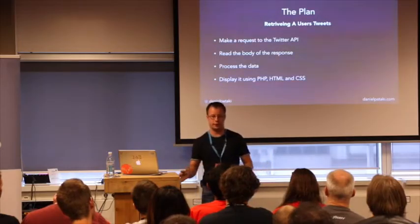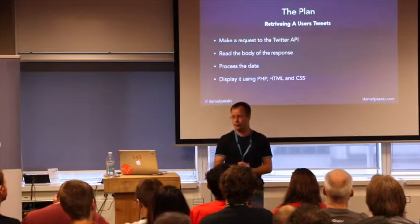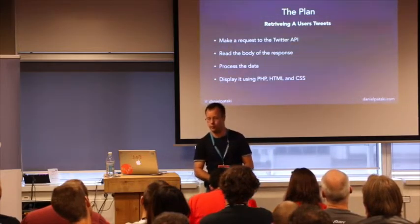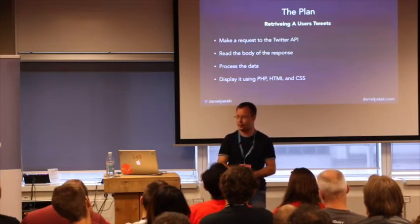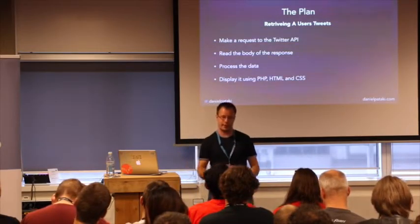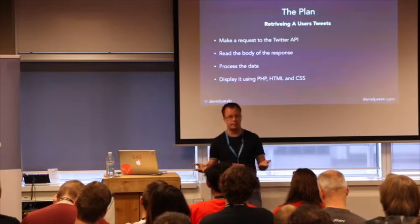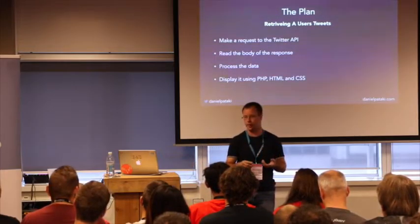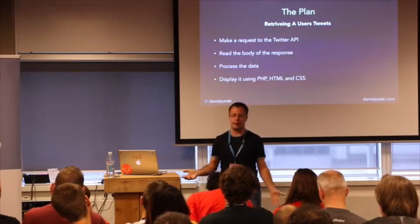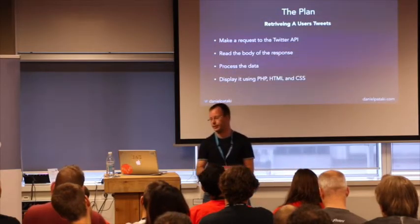Let's make a plan to retrieve some tweets from Twitter. We'll make a request to the Twitter API asking for tweets from a specific user. Once that's happened, we use the WordPress functions to read the response body, which contains all the information about those tweets. Next, we process the data — it will most likely be a JSON encoded string, so at minimum we JSON decode it to make it an array, and filter or grab specific information. Then we display it with PHP, HTML, and CSS: create a foreach loop, HTML tags, and style it all with CSS.